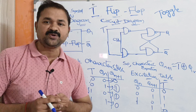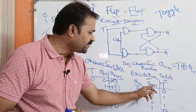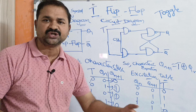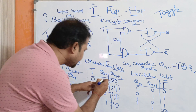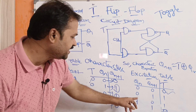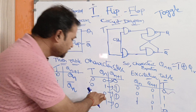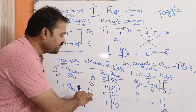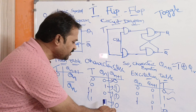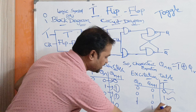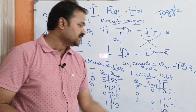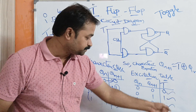Now let us see the excitation table. Q(n) and Q(n+1) are the inputs and T is the output, giving four combinations: 00, 01, 10, 11. If Q(n)=0 and Q(n+1)=0, then T=0. If Q(n)=0 and Q(n+1)=1, then T=1. If Q(n)=1 and Q(n+1)=0, then T=1. If Q(n)=1 and Q(n+1)=1, then T=0. So the excitation table values for T are: 0, 1, 1, 0. This concludes the discussion of the T flip-flop.